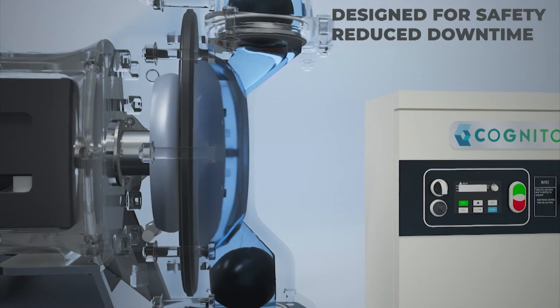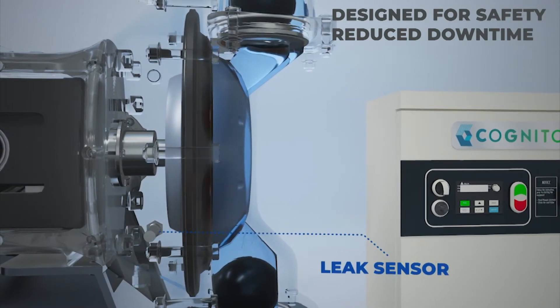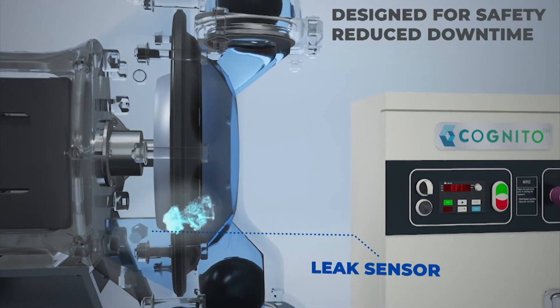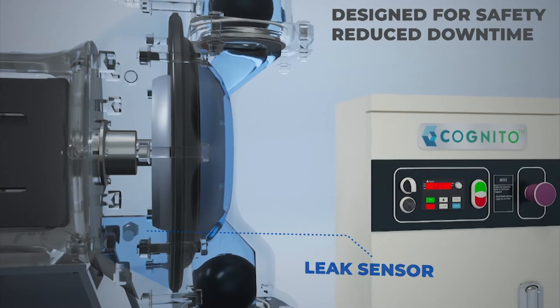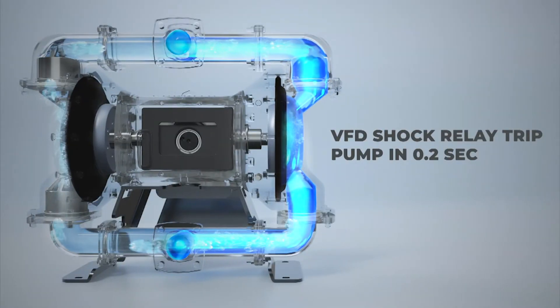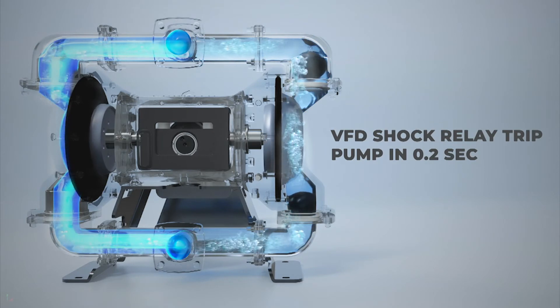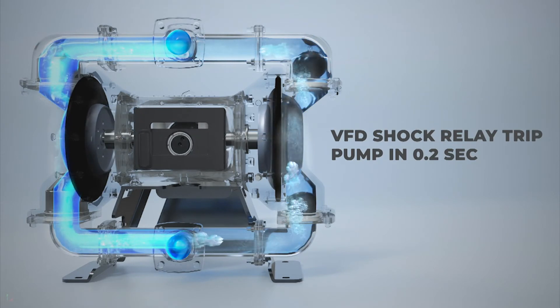The leak detector sensors detect even a small leak from the diaphragm and trip the pump to avoid leakage of the process fluid and eliminate hazardous conditions. Pump automation is designed in such a way that it can protect itself in choke condition or deadhead application.